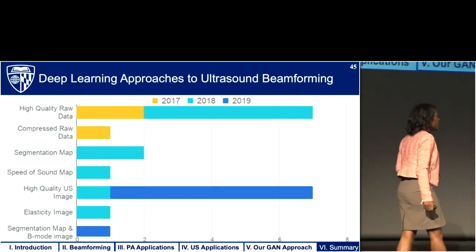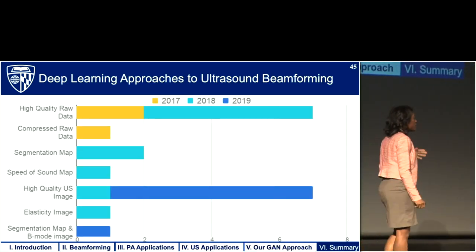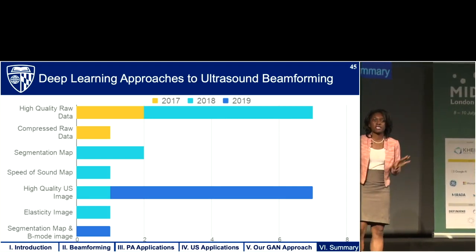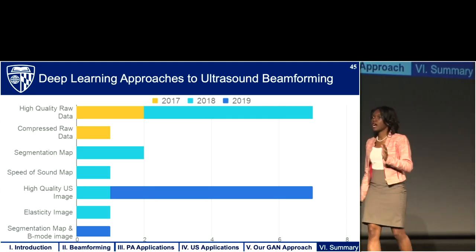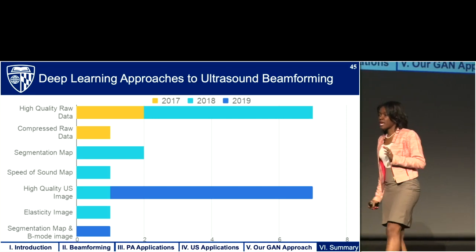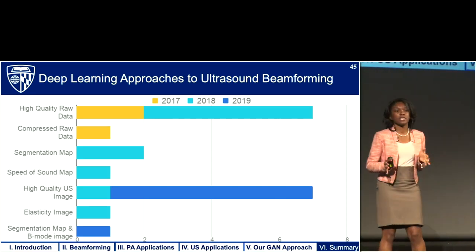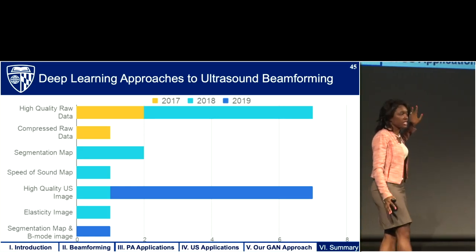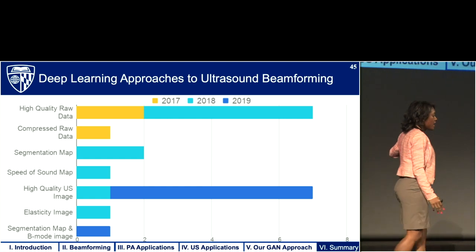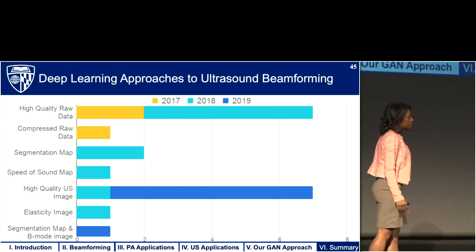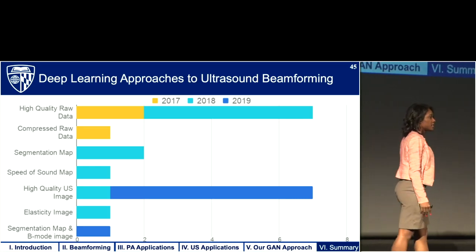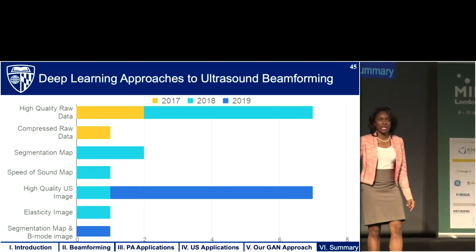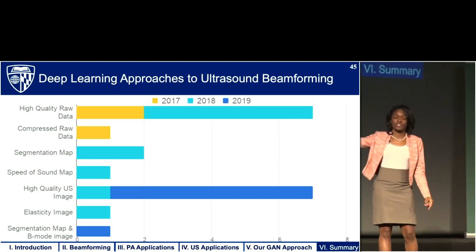The outputs of the network are not just limited to segmentations or images — there is a list of other outputs that have been learned over the years. This plot shows a three-year history of the field, where the x-axis shows the number of publications that have learned different outputs from raw input data. The different outputs include high-quality raw data, compressed raw data, segmentation maps, speed of sound maps, high-quality ultrasound images, elasticity images, and combined segmentation maps with B-mode images.